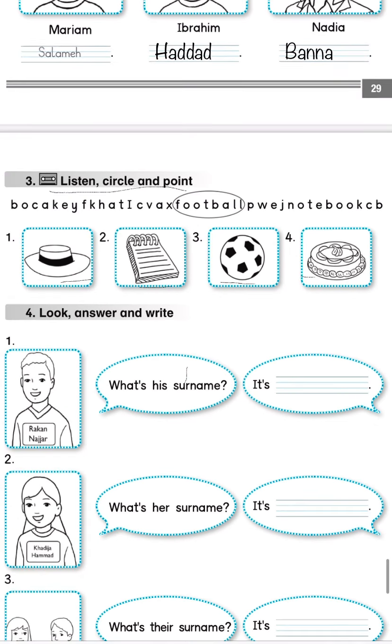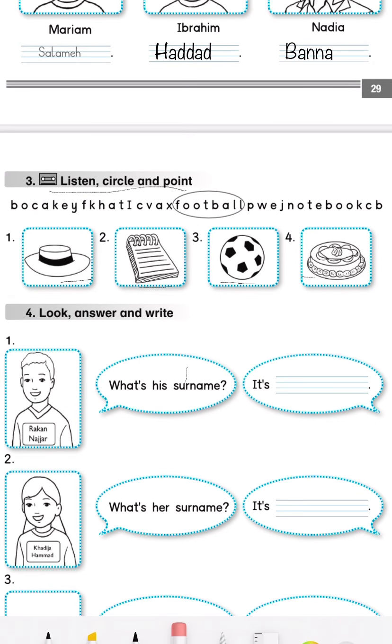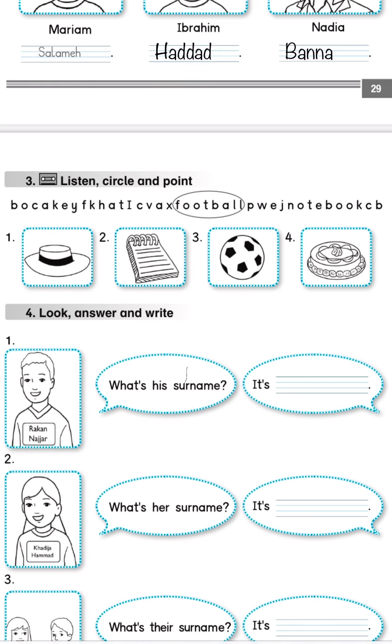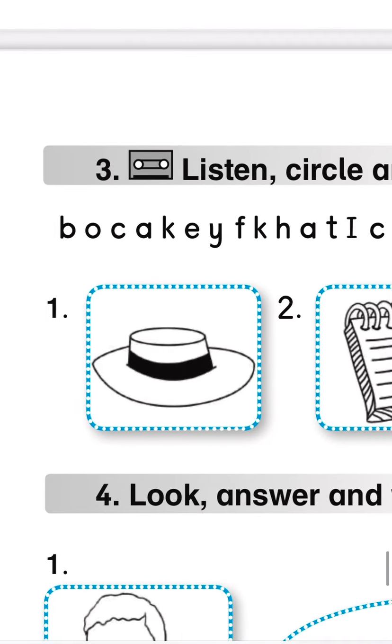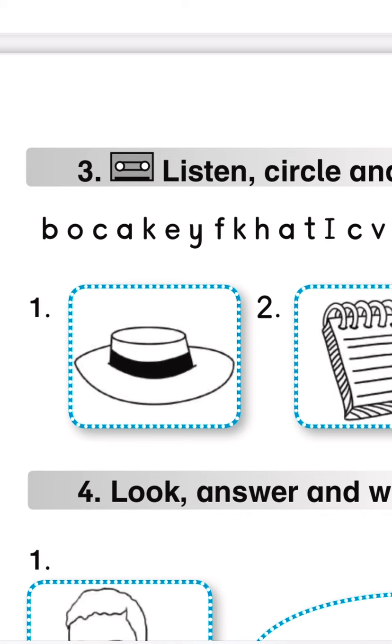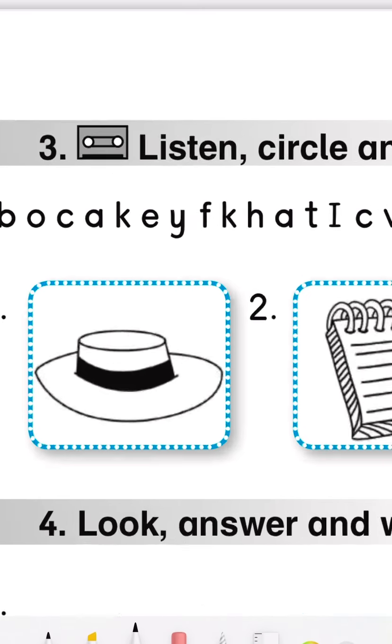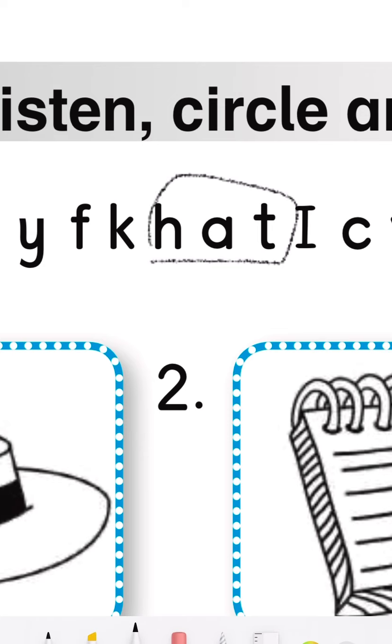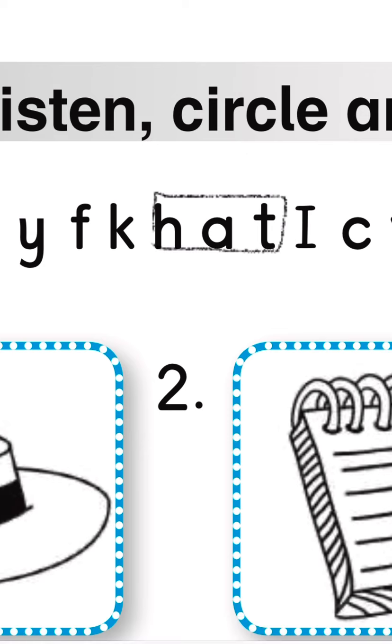Now, let's put a circle on their names. The first one is hat. Let's find hat. Can you see it? H-A-T. Where are they? Excellent. Here they are. H-A-T. Bravo.